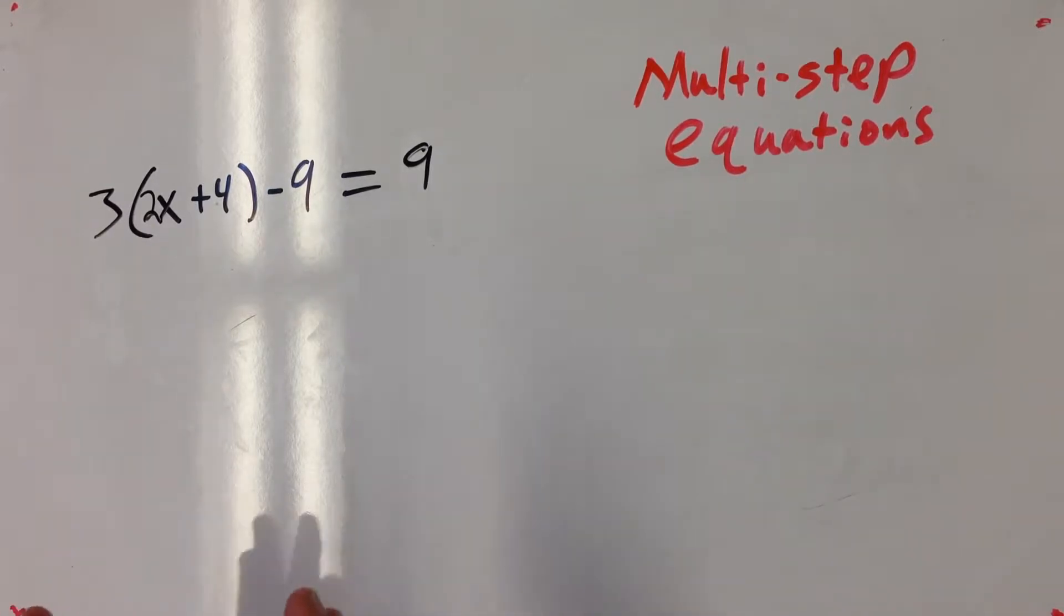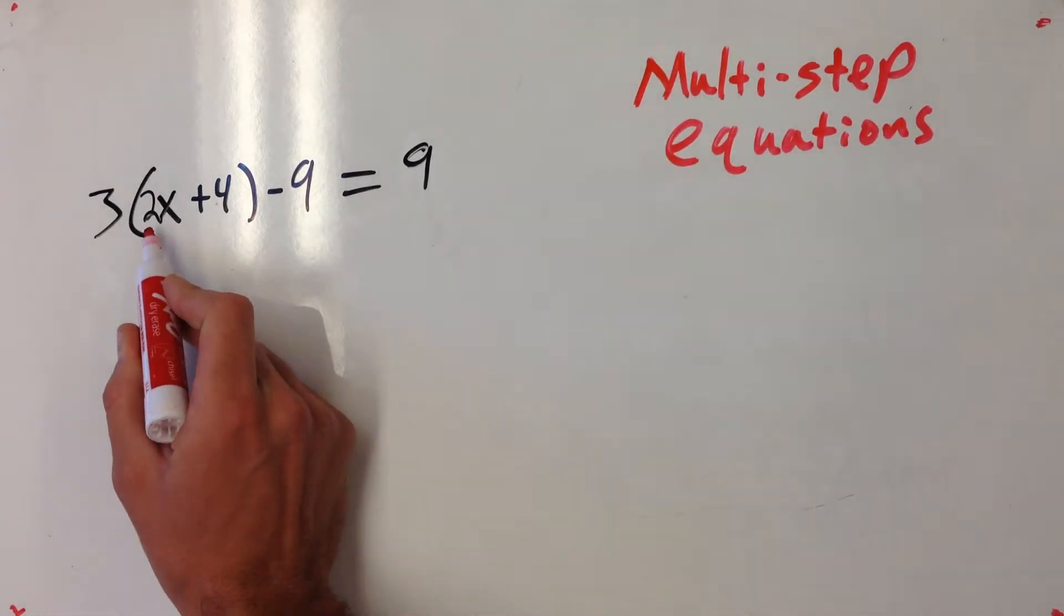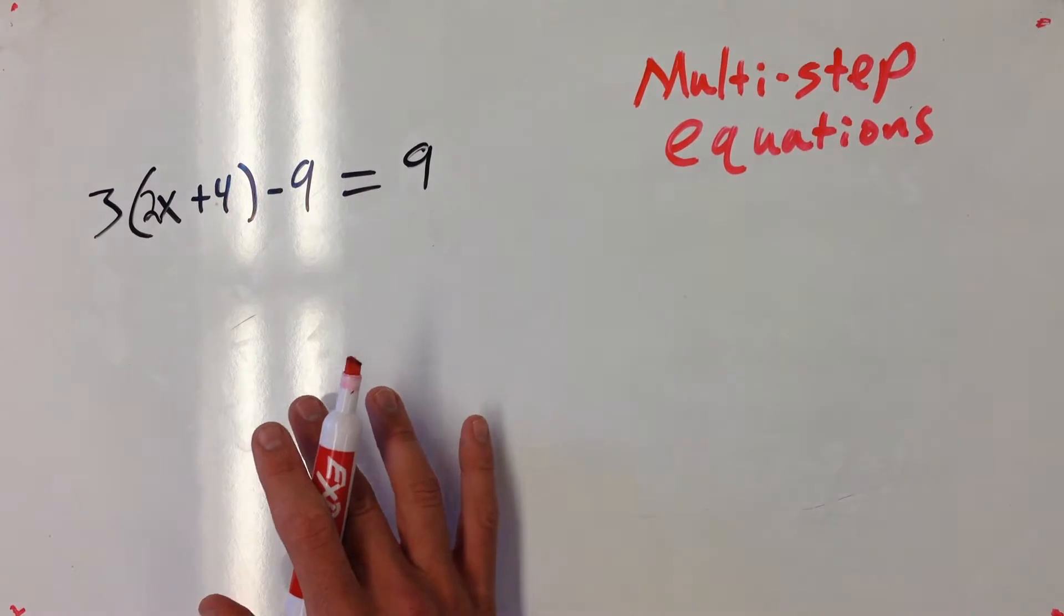But what I'm going to do is I'm just going to simplify the left side and then I'm going to worry about the actual solving. So the first thing I can do, I can't do anything inside these parentheses, like 2x plus 4, that's not 6x, so I can't do anything there.